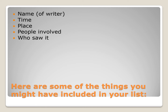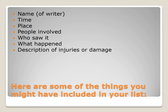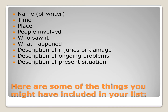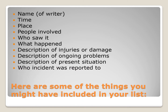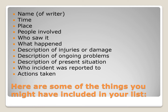You might also include who observed the event. Again, you may or may not include names depending on your organization's policy. What happened during the event, the description of injuries or the condition or damage that occurred, the description of the situation, description of ongoing problems, description of the present situation, description of who the incident was reported to, and description of actions taken and even actions or plans that are still to be taken.